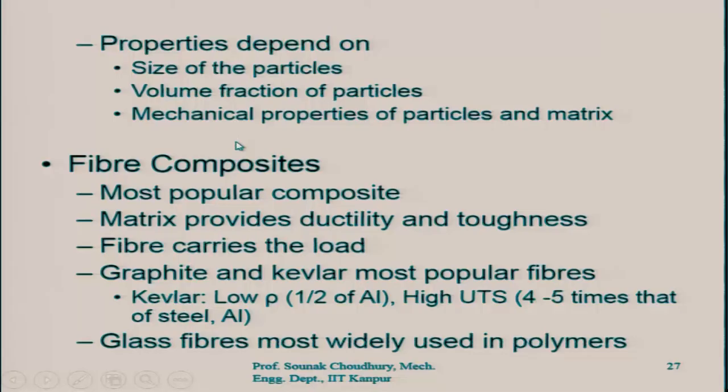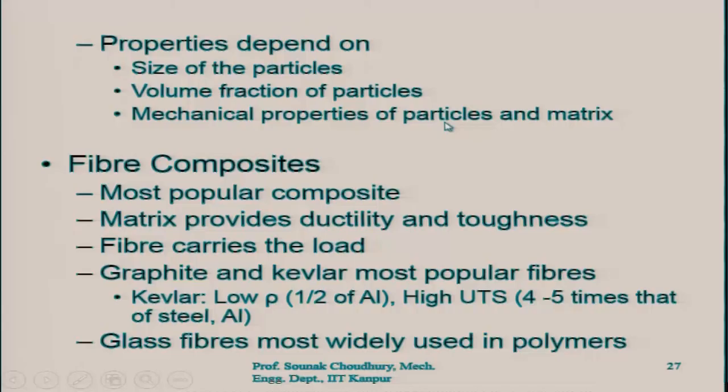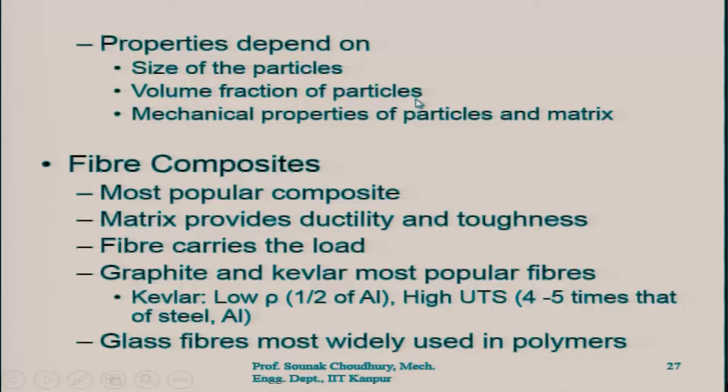The properties of composite materials also depend on the size of the particles, the volume fraction of particles — that is, what fraction of the volume those particles occupy — and the mechanical properties of both the particles and the matrix. In composite materials the properties are normally different from and better than the properties of the particles and the matrix taken individually. If there are smaller particles, they can withstand better because the density is more and it will be stronger. The rest of the discussion on composite materials will continue in our next discussion session. Thank you for your attention.